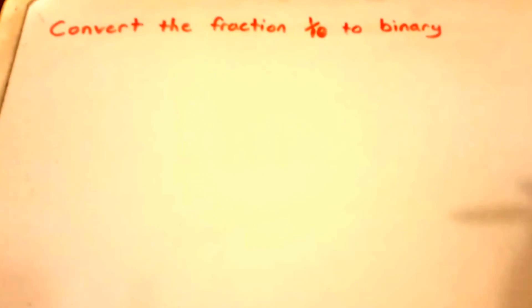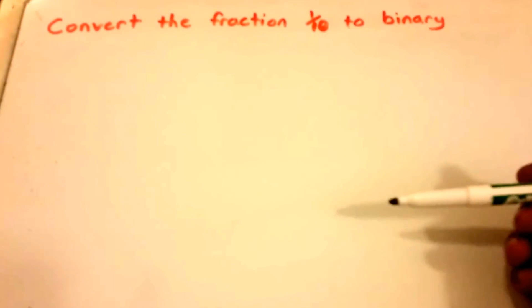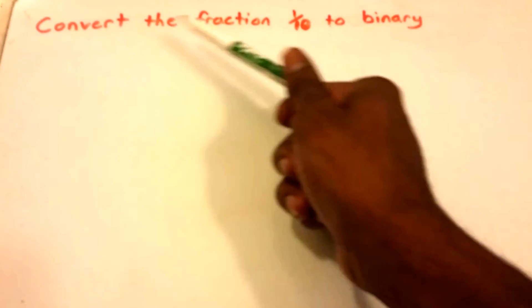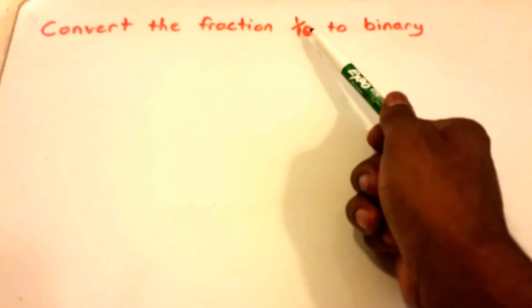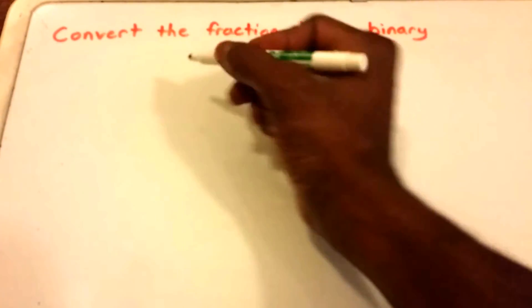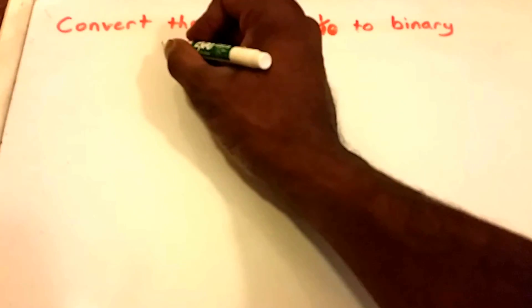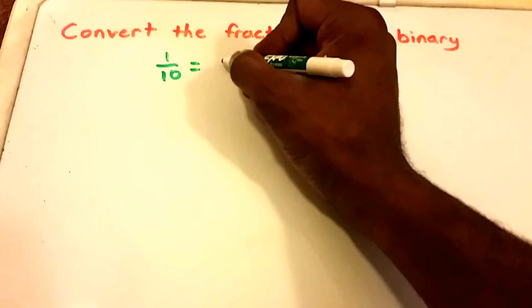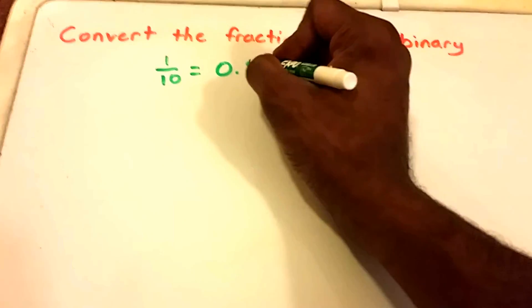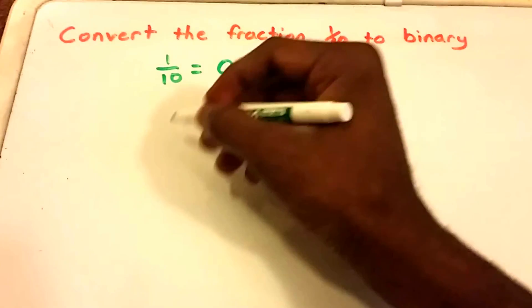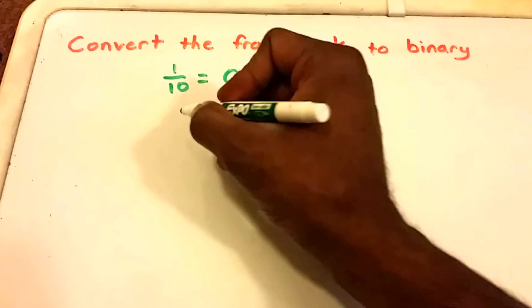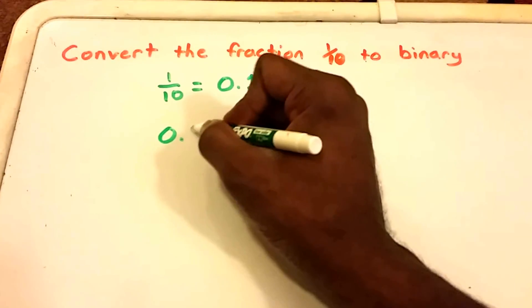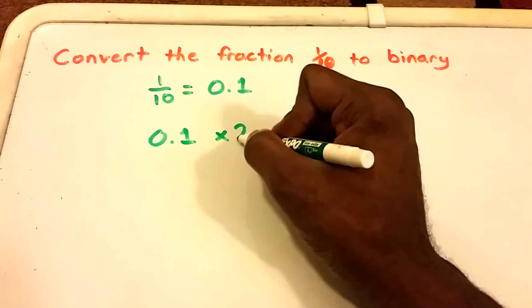Hello everyone and welcome to this video on converting a fraction to a binary number. Here we want to convert the fraction 1 divided by 10 to binary. I'm going to take our fraction, which is 1 divided by 10, and put it in its decimal form, which is 0.1, and then convert it to a binary number.